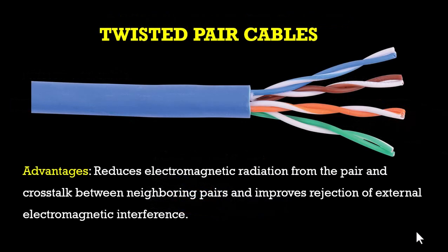Taking a look at the twisted pair cable, this cable is used for transmission of both digital and analog signals and it is one of the most popular types of cables in use today. It is made up of two insulated copper cables that are twisted together to reduce electromagnetic interference. This twisting also helps to keep the wires separated so that they do not touch each other and cause a short circuit.